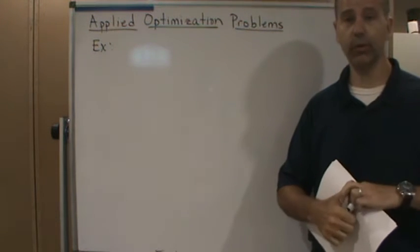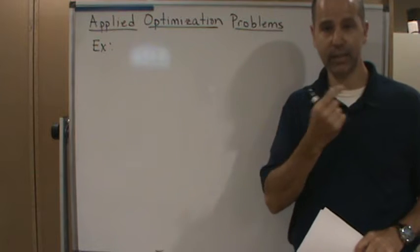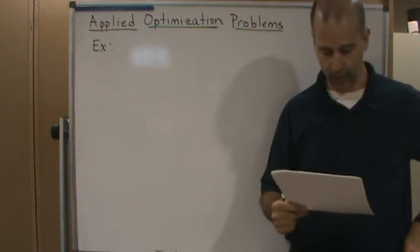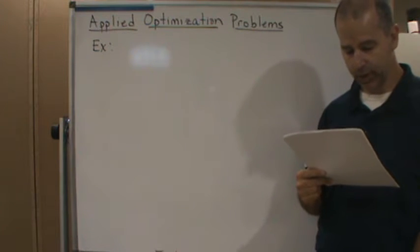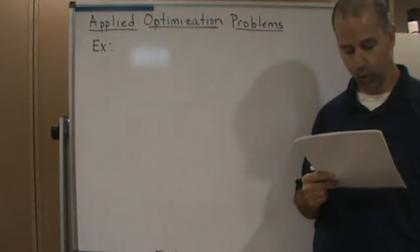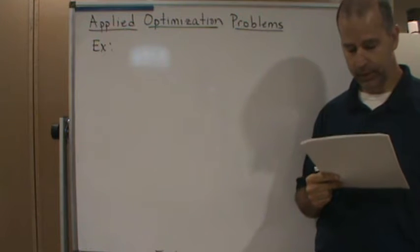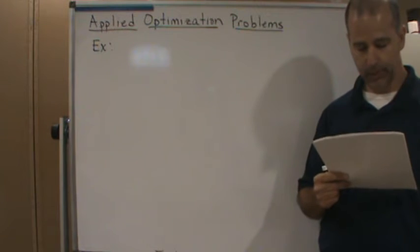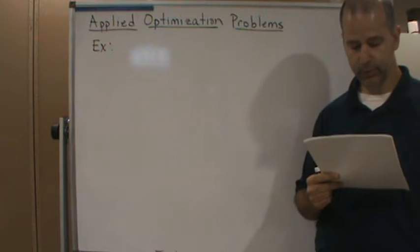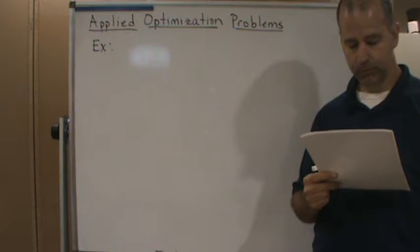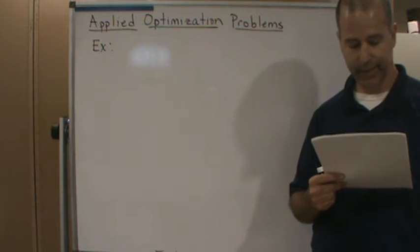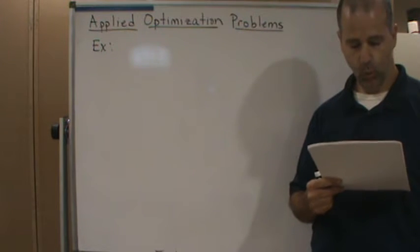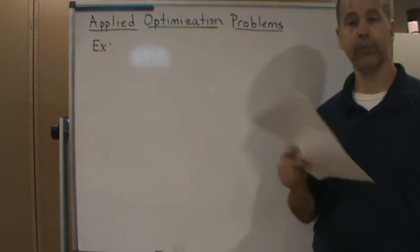Welcome back. Now we're going to do an example about maximizing the area of a garden. A rectangular garden is to be constructed using a rock wall as one side and wire fencing for the other three sides. We're given 100 linear feet of wire fencing. Determine the dimensions that would create a garden of maximum area, and what is the maximum area?